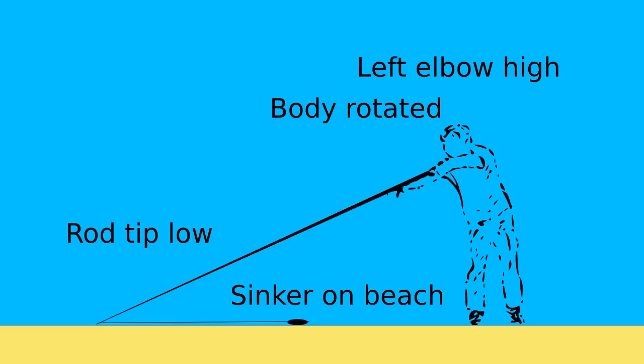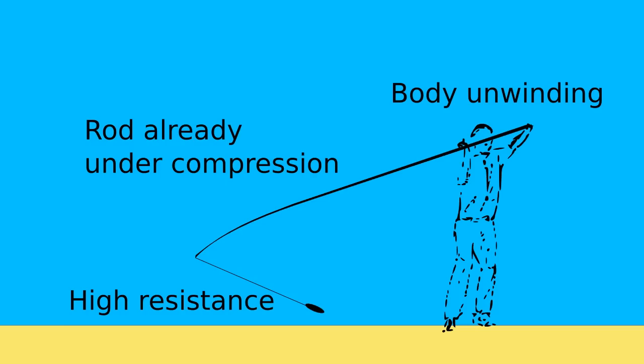Low rod tip and high left elbow ensure that the cast accelerates on a long, smooth path. When action begins, the spring unwinds powerfully. All that energy goes into the rod, which immediately bends against the sinker's resistance. The sinker lifts from the beach and follows the rod tip at exactly the right angle.